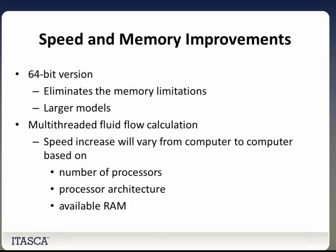Here are some of the speed and memory improvements. We have the 64-bit version, which is going to eliminate a lot of the memory limitations imposed by a 32-bit operating system, allow for larger models, and models will only be limited by the physical memory of the computer. Additionally, we have multi-threaded fluid flow calculation. In FLAC 7, the equations of motion and constitutive relations were multi-threaded, but now in FLAC 8 we've added multi-threaded calculations for fluid flow. This will increase calculation speed, varying based on the number of processors, processor architecture, and available RAM.